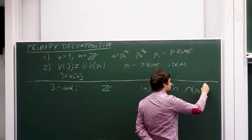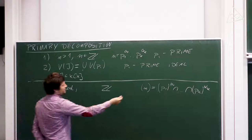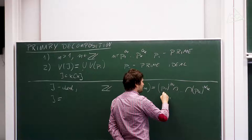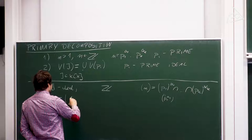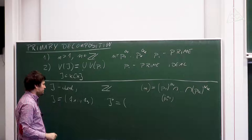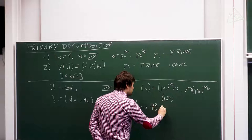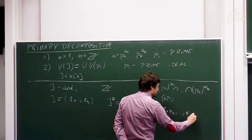Let me clarify what I mean by a power of an ideal. In the integers, since we have just one generator, p^α is just the ideal generated by that number. In general, if we have more generators, the k-th power of an ideal is generated not only by powers of individual generators but by all products. For example, the square of (f_1, …, f_s) is generated by f_1², …, f_s², and all products f_i·f_j.